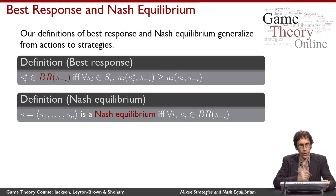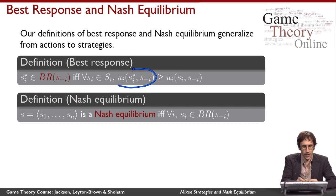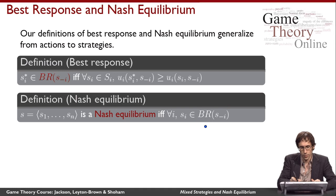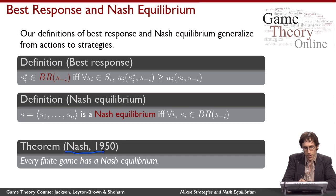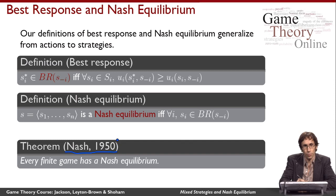This might seem like much ado about nothing — I've introduced randomizing as a strategy, redefined utility, used that to define best response, and used that to define Nash equilibrium. But what matters is that now with this new definition of Nash equilibrium, we can state a theorem we didn't have before: Nash's famous theorem, which is one of the main reasons Nash got the Nobel Prize. The theorem is that every finite game has a Nash equilibrium.